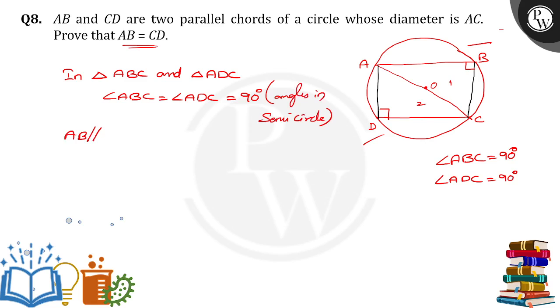AB is parallel to DC. Since AB is parallel to DC, AC is the transversal. So I can write angle CAB is equal to angle ACD. These two angles are equal because they are alternate angles.